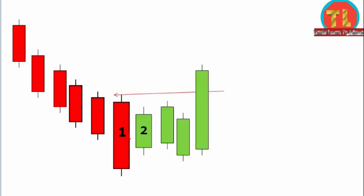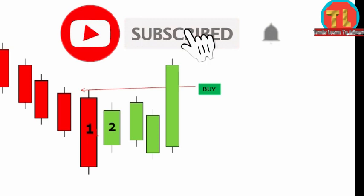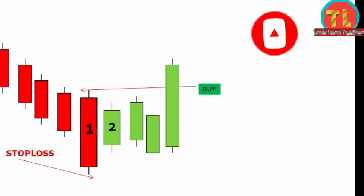Whenever a candle breaks the high of the first candle of this pattern, an entry is taken. After taking the entry, the stop loss is placed below the first candle.